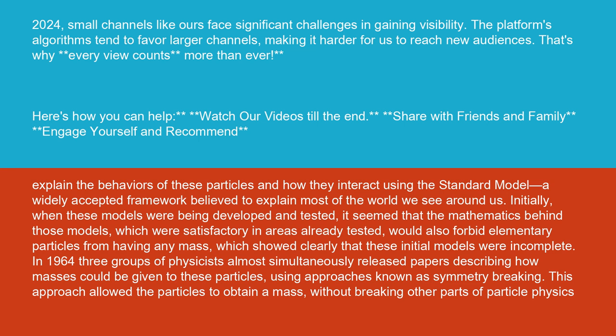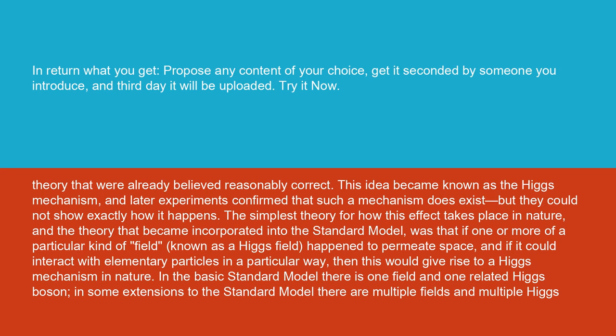In 1964, three groups of physicists almost simultaneously released papers describing how masses could be given to these particles using approaches known as symmetry breaking. This approach allowed the particles to obtain a mass without breaking other parts of particle physics theory that were already believed reasonably correct.